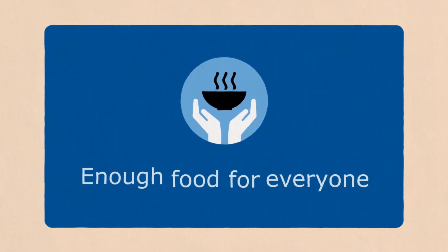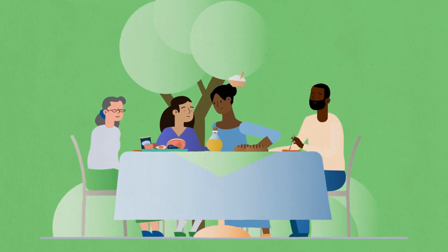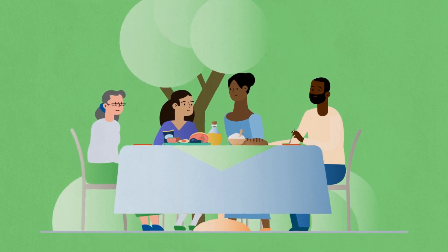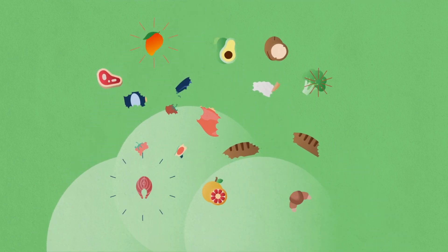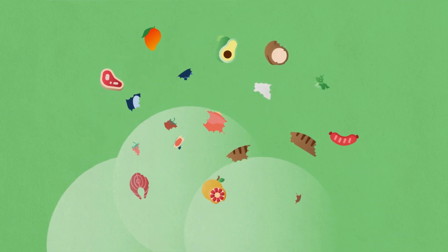Enough food for everyone. More than 800 million people around the world are going hungry, and that number rises every day. At the same time, one-third of all food produced is wasted. We need to ensure sufficient food for everyone and better consumption patterns in our population.